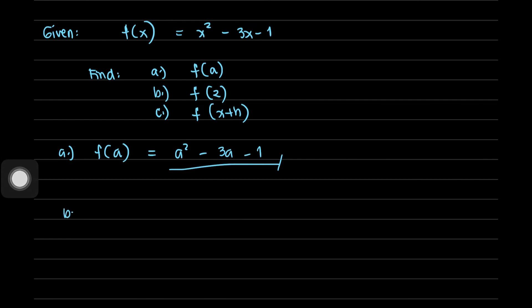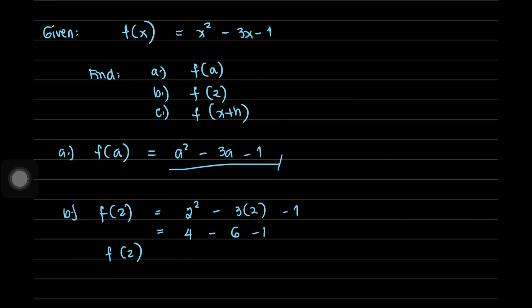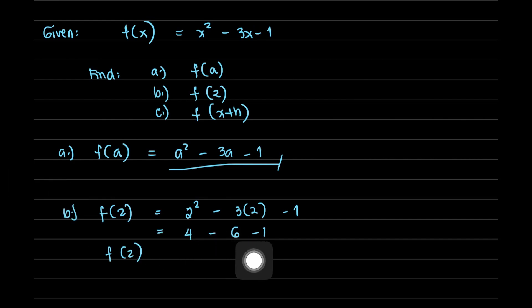For part (b), f(2): replacing x with 2, we have 2² - 3(2) - 1, which equals 4 - 6 - 1. So f(2) = 4 - 6 = -2, minus 1, which equals -3.